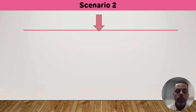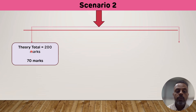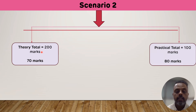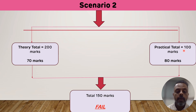Scenario number two: if a student has secured 70 marks out of 200 in theory and 80 marks out of 100 in practical, the aggregate of both is 150 marks. However, the student is still declared as fail because in theory the student was not able to secure the minimum 40%. So in this scenario the student will be failed.